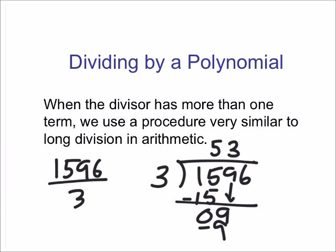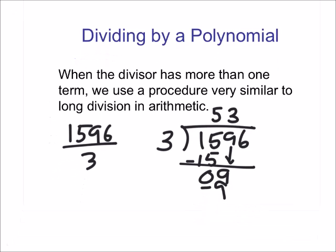Now, if by chance we ended up with some remainder here at the bottom, which in this case would be 0, then at the end we could say you're going to add the remainder, but divided by your original divisor there.